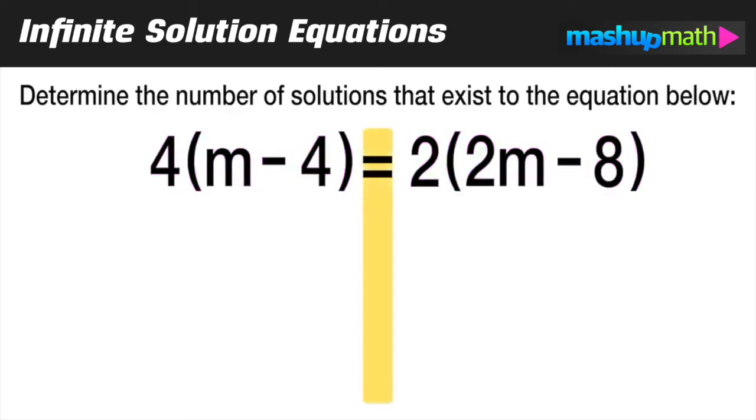We like to start out by forming a visual barrier between the left side of the equal sign and the right side. Now if we start on the left side, we're going to distribute that 4 outside of the parentheses. 4 times m equals 4m, and then 4 times a negative 4 is equal to negative 16.